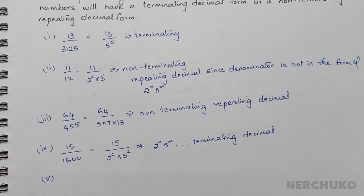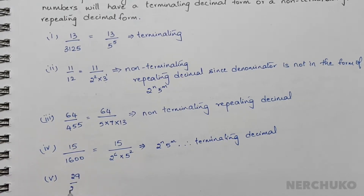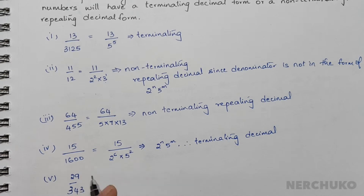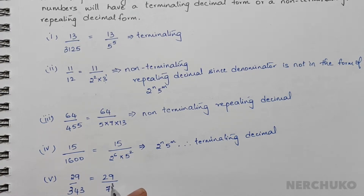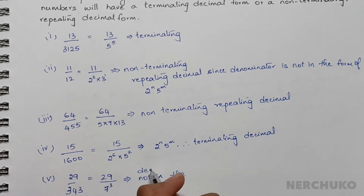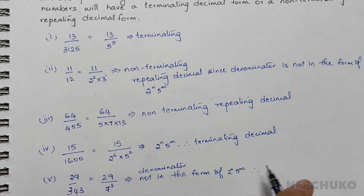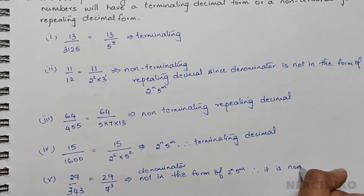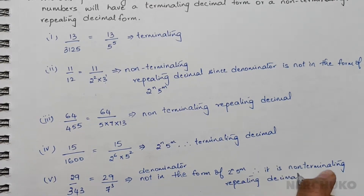For the fifth bit, we have 29 divided by 343. The prime factors of 343 are 7 cubed. Since the denominator is not in the form of 2^n × 5^m, it is a non-terminating repeating decimal.